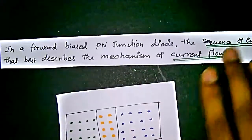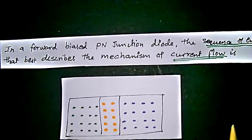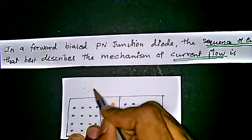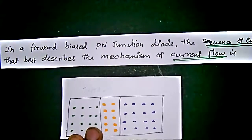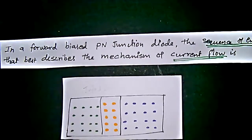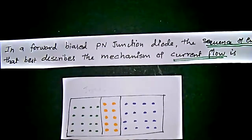These are the events of current flow when we connect the PN junction diode in forward bias. The sequence of events would be: injection of minority carriers, then diffusion of the majority carriers — because in the P region holes are the majority carriers — and finally recombination of carriers on both sides. Thank you, your comments are welcome.